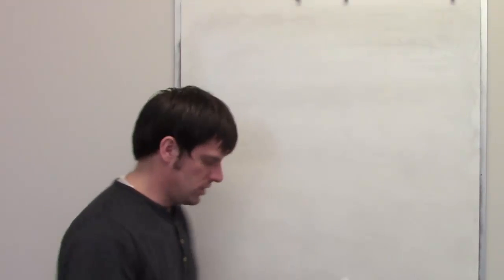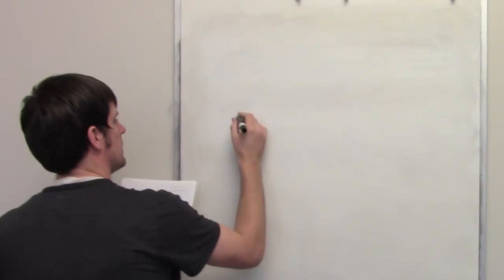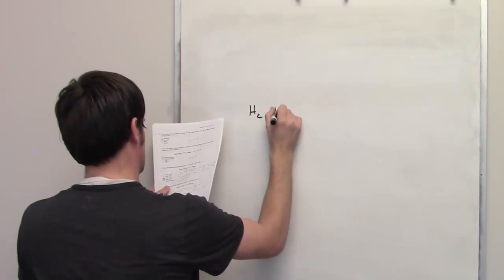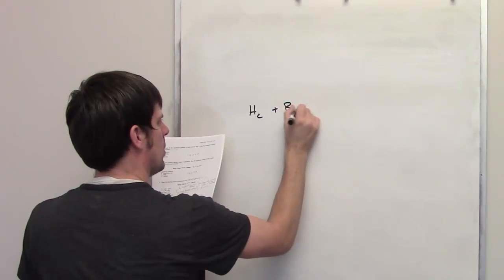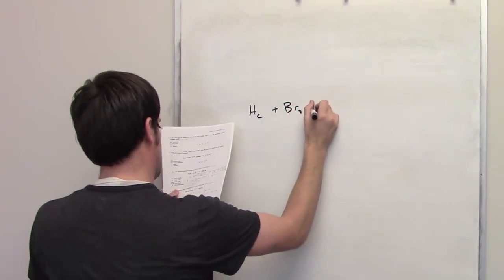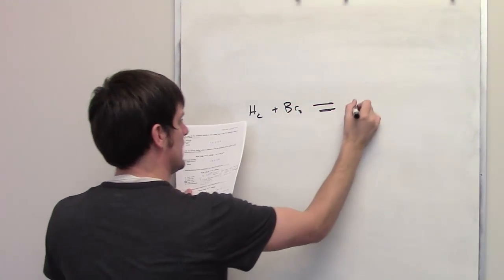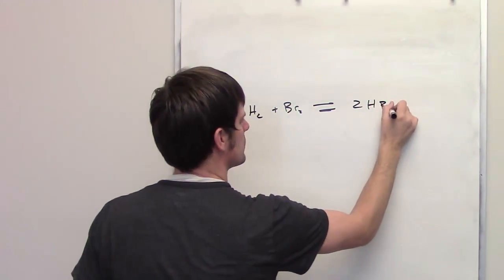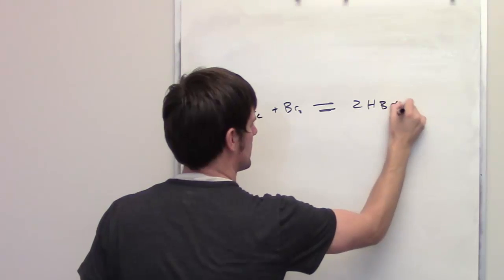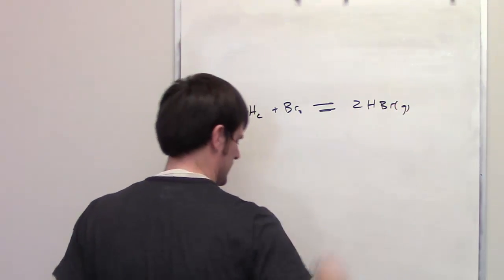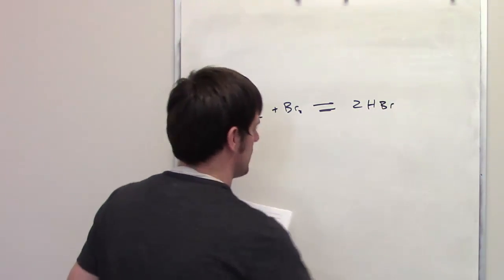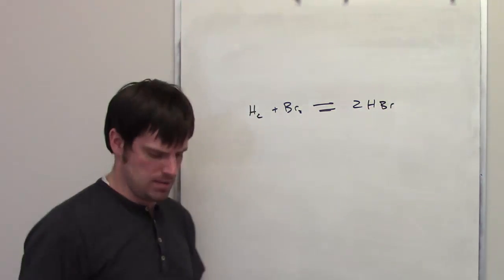We have a reaction here: a mole of hydrogen gas reacting with a mole of bromine gas in an equilibrium setting to yield two moles of hydrobromic acid. They're all gases — I'm kind of lazy and I'm not going to write the 'g' designation there.